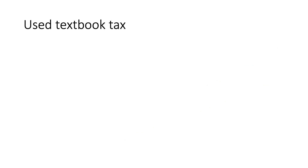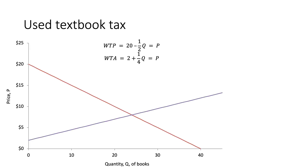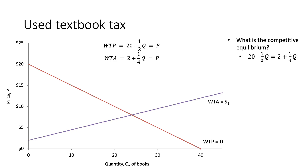Now we'll work with the used textbook tax example. We start with two functions: our willingness to pay function, which is our demand function, and our willingness to accept function, which is our supply function, and we'll see how this is illustrated graphically. Given that willingness to pay equals demand and willingness to accept equals supply, to find the competitive equilibrium all we need to do is set these equations equal to each other and solve. In this case, solving gives us Q* equal to 24.